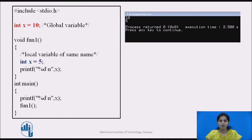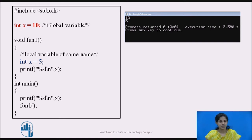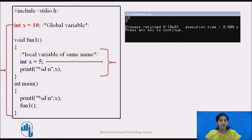Now we see a simple example of a global variable. We declare one global integer variable x equal to 10. Then we define fun1, which declares a local integer x equal to 5, displays it using printf, and closes. In the main function we use printf to display x and call the function. When control is in main, the first printf displays 10 because it refers to the global variable. When fun1 executes it displays 5.